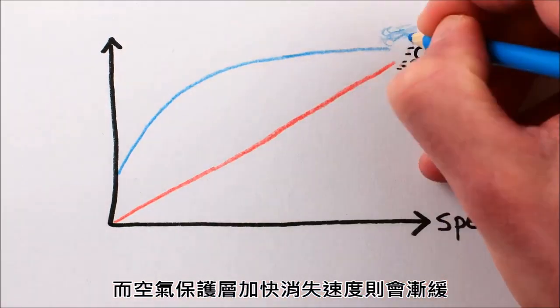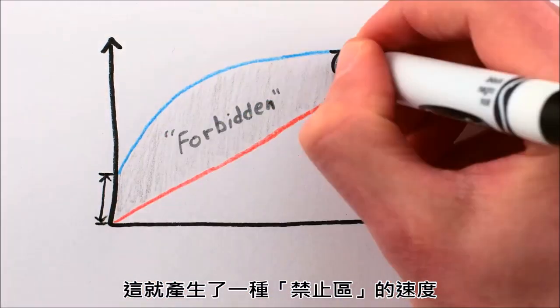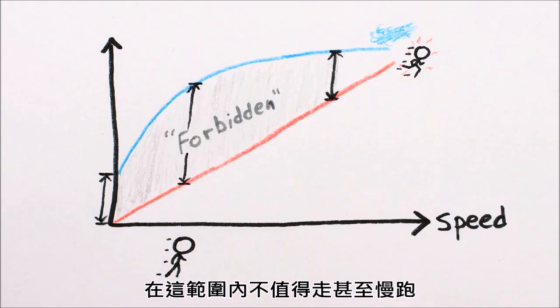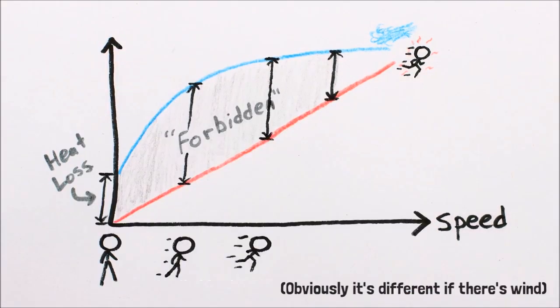Because the heat generated by running has a steady increase while your protective layer of warm air goes away quickly at low speeds, it turns out that there's a kind of forbidden range of speeds where it's not worth walking, or even running slowly, since you'd lose less heat standing still.